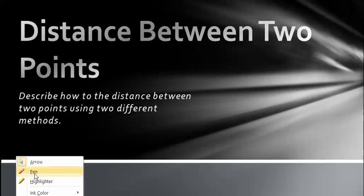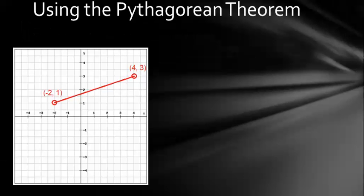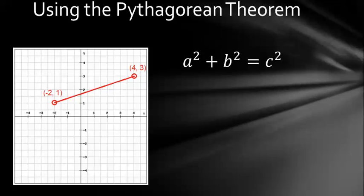This video is going to describe how to find the distance between two points using two different methods. The first method is using the Pythagorean theorem. The Pythagorean theorem is a squared plus b squared equals c squared.